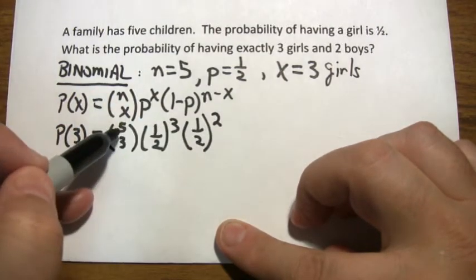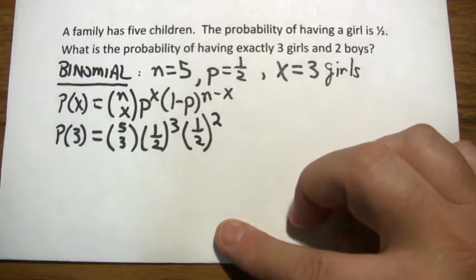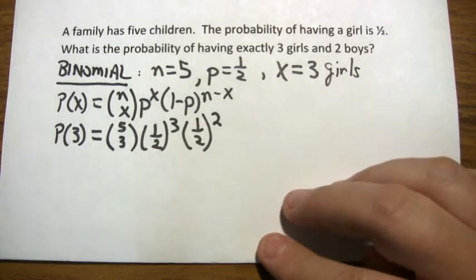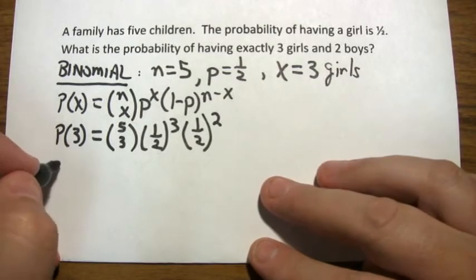In other words, the exponents, three and two, always add up to the top number in the combination. And now we have to do that calculation. Well, that's easy enough.